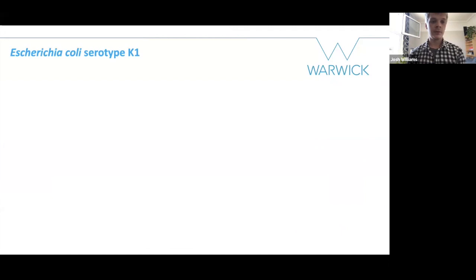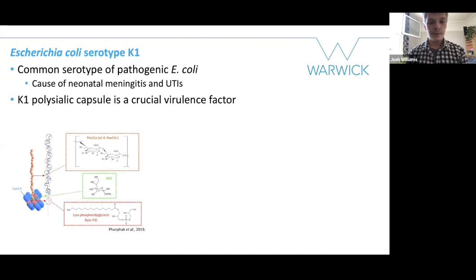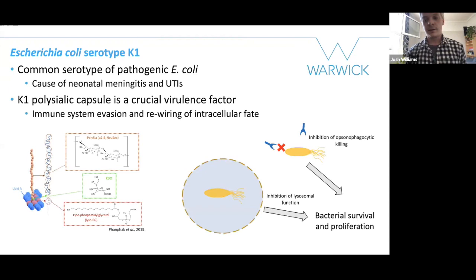To preface, I will talk a bit about E. coli serotype K1. This is a common serotype of pathogenic E. coli and is a cause of neonatal meningitis and urinary tract infections. This serotype is very invasive, due to its K1 polysialic capsule, which is a polymer of sialic acid with alpha-2A linkages linked to a lipid raft. E. coli K1 is so invasive as it is very good at evading the host immune system.